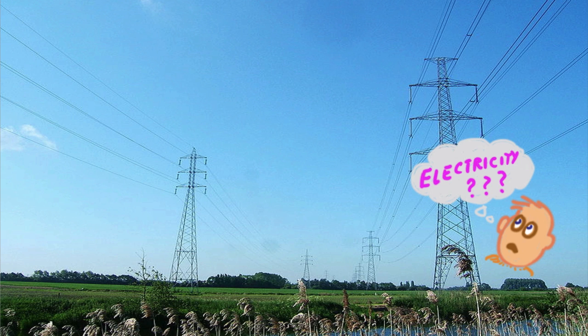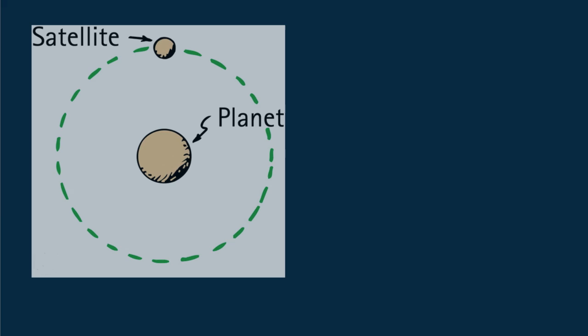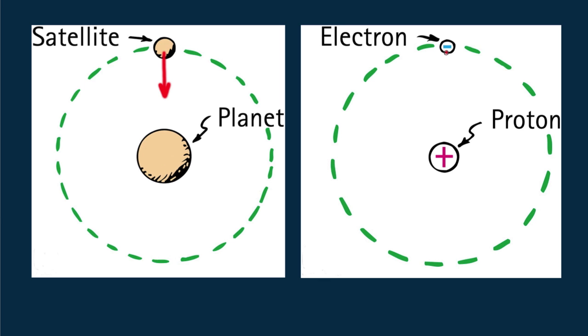We've learned that gravity involves gravitational forces between objects with mass. In a similar way, electricity involves electric forces between objects with electric charge. Here we see a gravitational force on a satellite orbiting a planet, and we see an electric force on an electron orbiting a proton in a hydrogen atom.